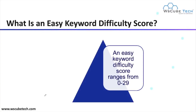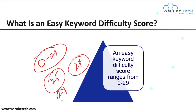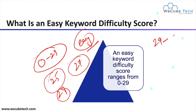What is an easy keyword difficulty score? If you have to decide on a keyword based on keyword difficulty, what score should you consider? The easy keyword difficulty score range is 0 to 29. For example, if your keyword research tool shows a keyword with difficulty of 25, 27, or 29, you can consider it as easy keyword difficulty.